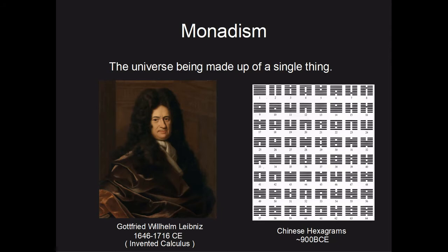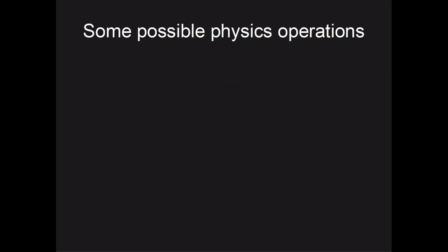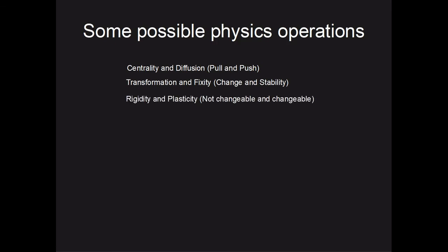In a theoretical universe, there can be many other values that would change how a particle might act. For example, in a spatially four-dimensional universe there would need to be four values for the position of a particle. While our universe's rules are almost solely based on centrality and diffusion of particles — what might be called push and pull — there are many other digital concepts like transformation and fixicity, rigidity and plasticity, or more advanced concepts that could alter how quickly or slowly the rules of physics apply to each particle. This could lead to individual particles having thousands of values attached to them.